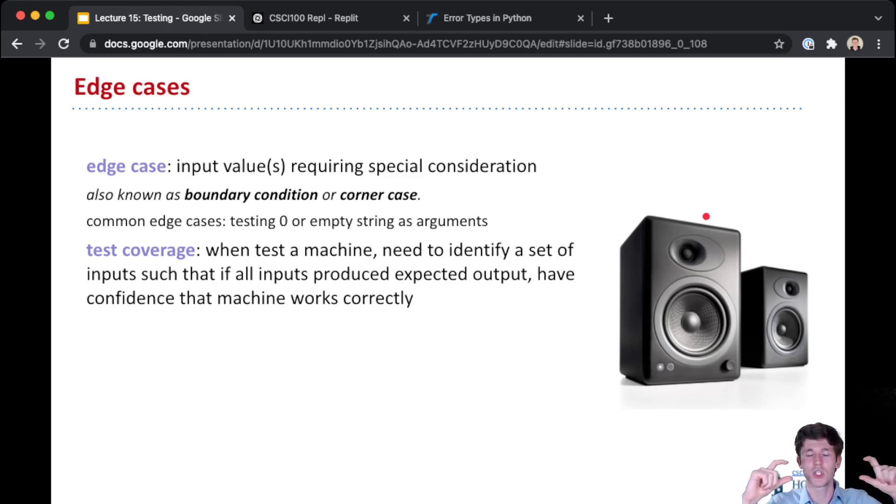Sometimes we call these boundary conditions or corner cases. Oftentimes, for things that take integers, zero is a special condition, or an empty string for something that takes a string, or an empty list. But depending on the problem, it might be something different, so it's problem specific.